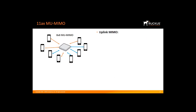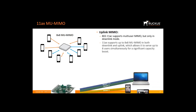OFDMA also works in tandem with multi-user MIMO. Multi-user MIMO allows an AP to address multiple devices simultaneously instead of one at a time sequentially. Multi-user MIMO was introduced in 11ac, but only in the downlink mode. 11ax supports up to 8x8 multi-user MIMO in both downlink and uplink modes, which allows it to serve up to 8 users simultaneously for a significant capacity boost. Multi-user MIMO also benefits the performance of legacy devices such as 802.11ac Wave 2 and older devices to improve every device's experience.